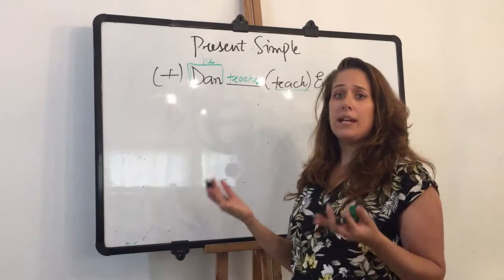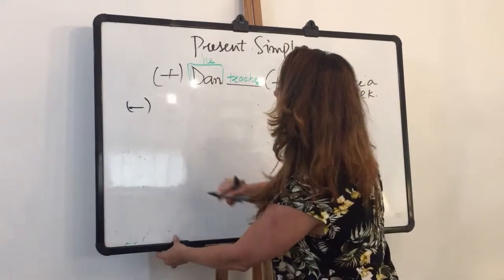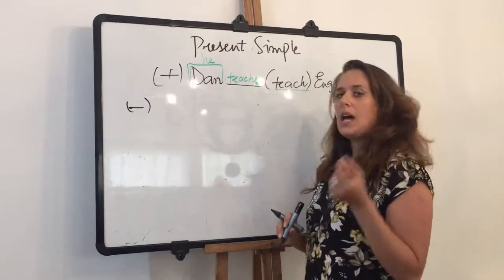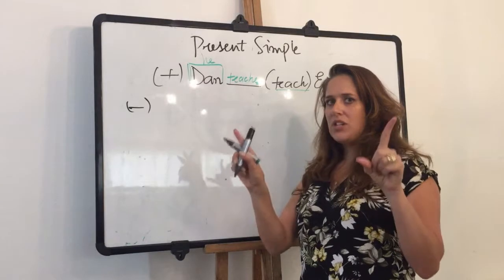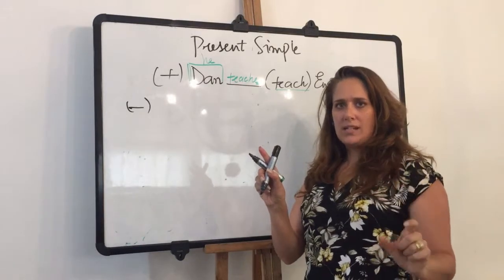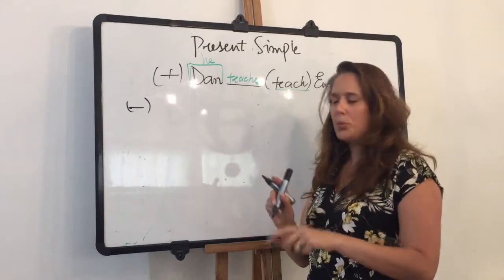Now I want to make it a negative sentence. Negative sentence. I have to remember that I have a division of pronouns. I, you, we, and they. One group. He, she, and it. Another group.